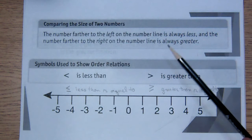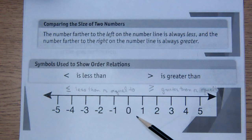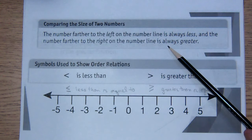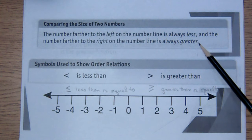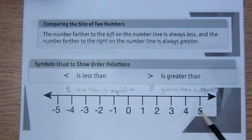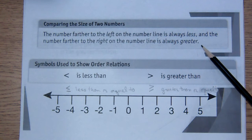When we're comparing the size of two numbers on a number line, the number further to the left on the number line is always less. So for example, minus 3 is less than 1 because minus 3 is further to the left than 1, and the number further to the right on the number line is always greater, so 5 is greater than 1 because 5 is to the right of 1 on the number line.